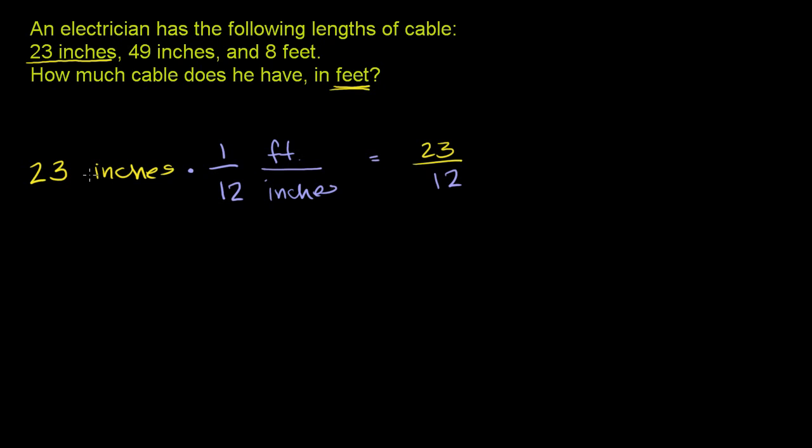The inches, this inches cancels out with that inches, and we're just left with feet. So that is 23 over 12 feet. And this is an improper fraction, but I'll leave it as an improper fraction for now because they're actually easier to manipulate than mixed numbers. So that's that first cable.